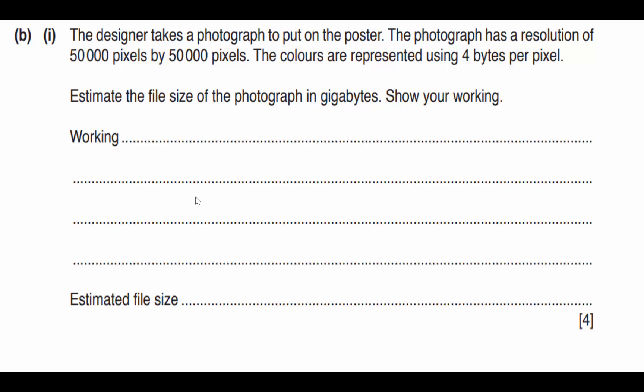The designer takes a photograph to put on the poster. The photograph has a resolution of 50,000 pixels by 50,000 pixels. That is quite the image right there. The colors are represented using four bytes per pixel. My God, this is a huge image. Anyway, let's keep going. So we do 50,000 times 50,000. We get 2.5 billion pixels. Yeah. 2.5 billion. We know there's four bytes per pixel. So I'm simply going to multiply that out and I get 10 billion bytes.